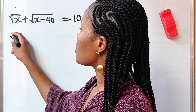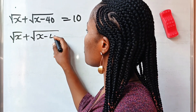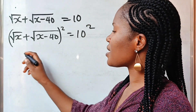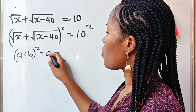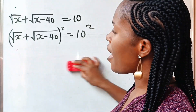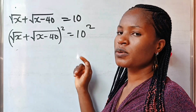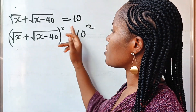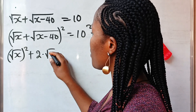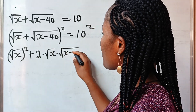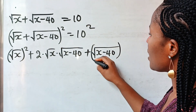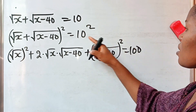If we square both sides, we have square root of x plus square root of x minus 40, all squared, is equal to 10 squared. Now remember that a plus b all squared is equal to a squared plus 2ab plus b squared. In this case, our a is root x and our b is square root of x minus 40. So it's going to be a squared — that is square root of x squared — plus 2ab, which is 2 multiplied by root x multiplied by root of x minus 40, then plus b squared, which is square root of x minus 40 squared, all equal to 100 because 10 squared is 100.